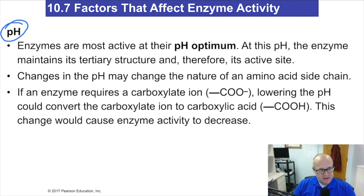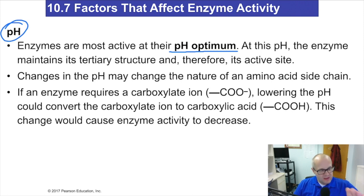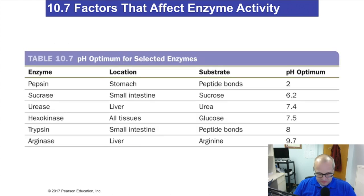pH — now we learned before that acids and bases will denature a protein, and enzymes are proteins. So there is a pH optimum for every enzyme in your body. Too high pH, too basic — things slow down, denaturing occurs. pH too low — again things slow down, denaturing occurs. So pH matters when it comes to enzyme activity.